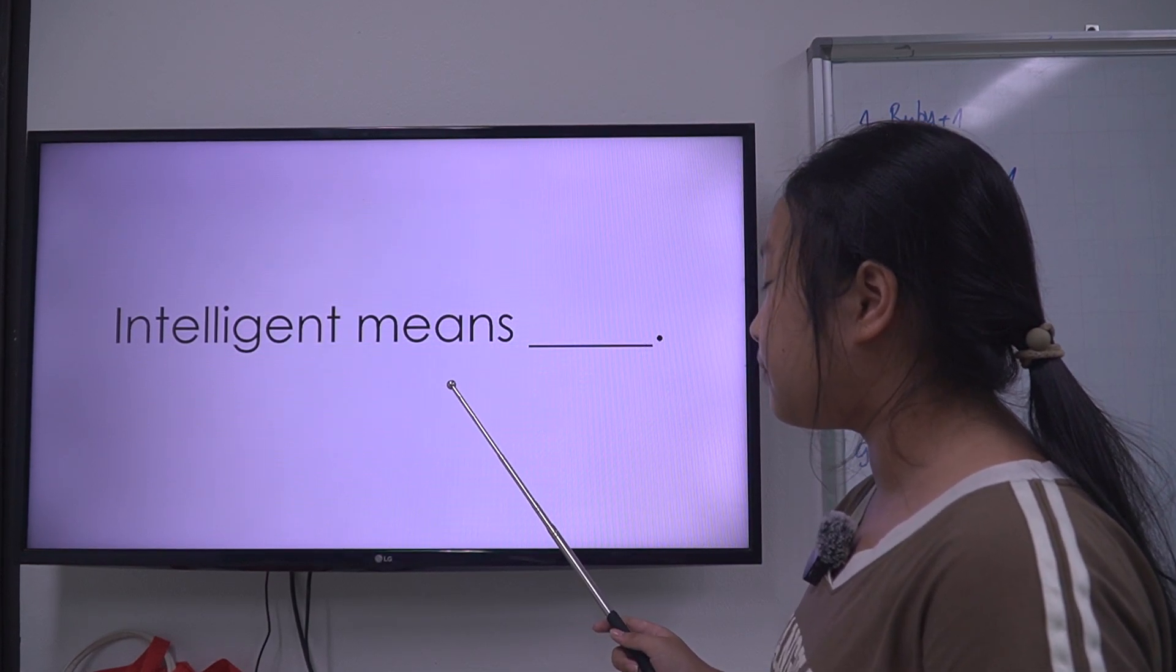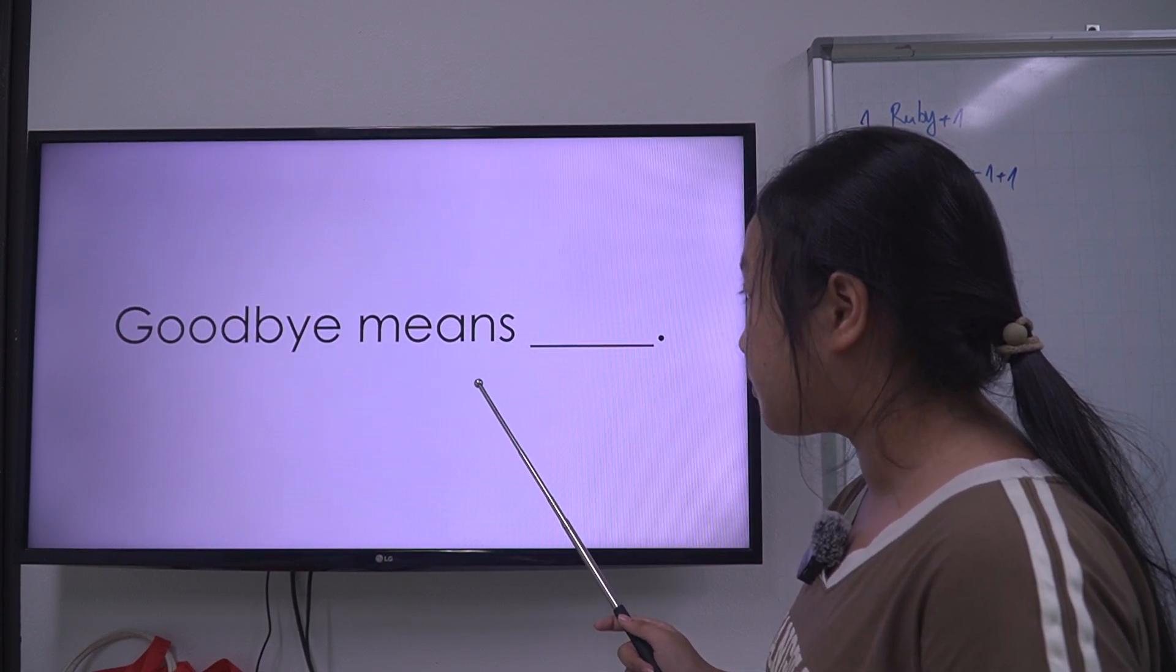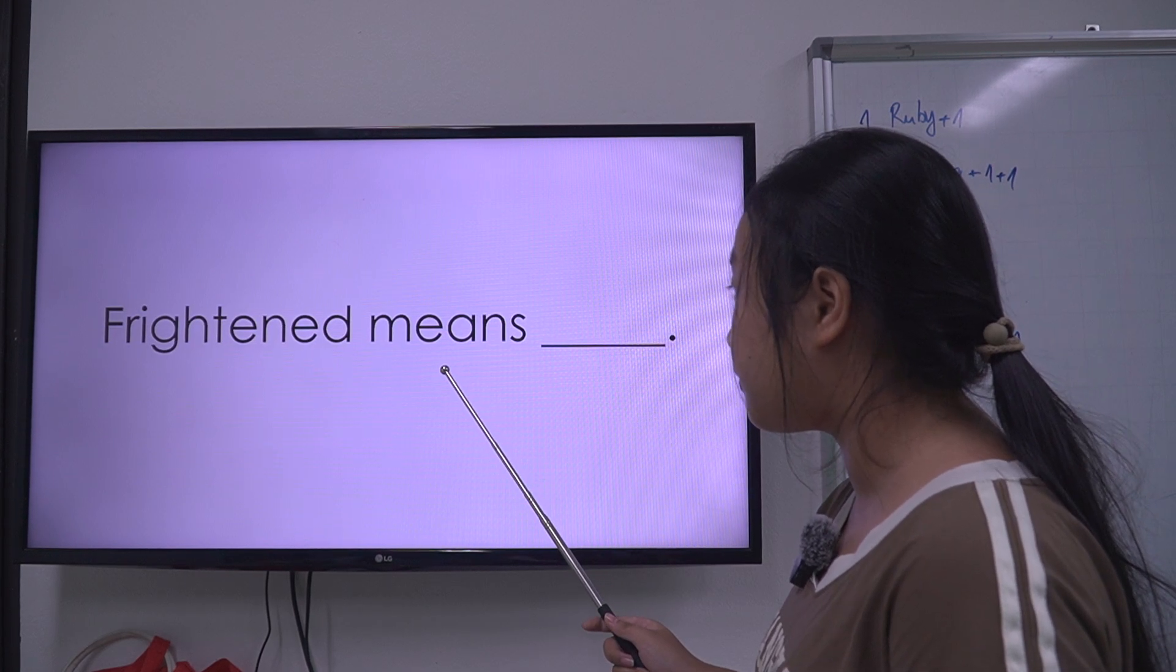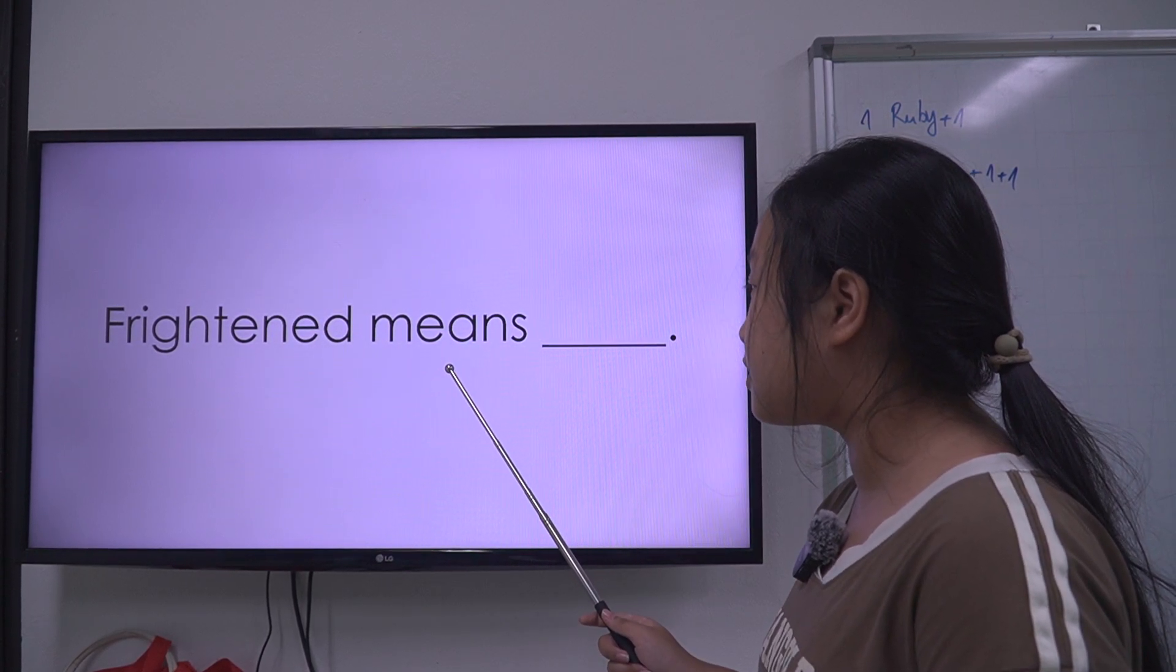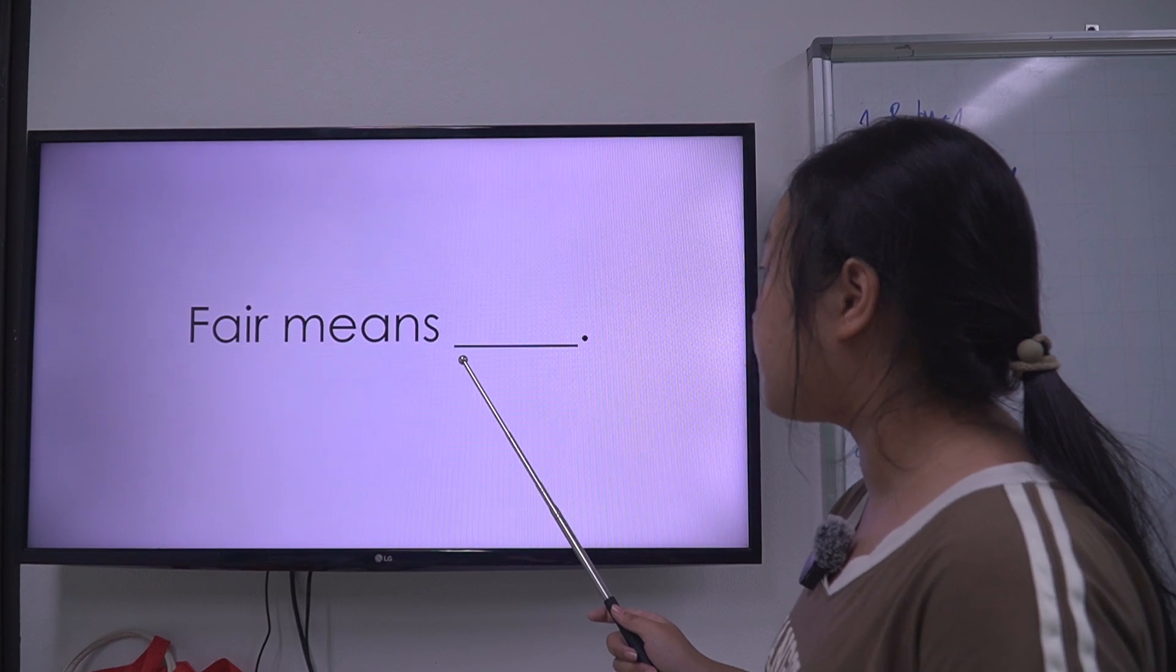Next, what does intelligence mean? Intelligence means smart. Next, what does goodbye mean? Goodbye means see you. Next, what does frightened mean? Frightened means afraid. What does fair mean? Fair means long.